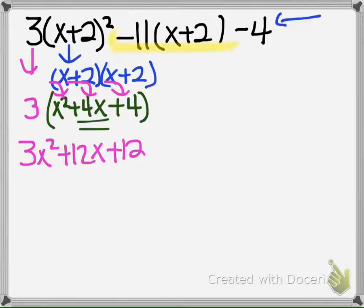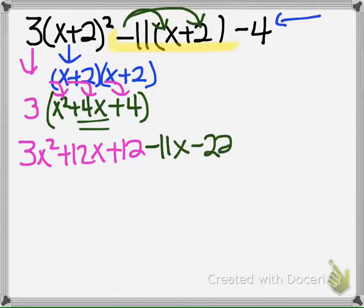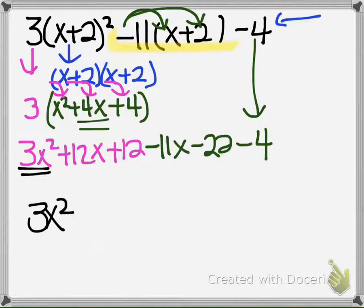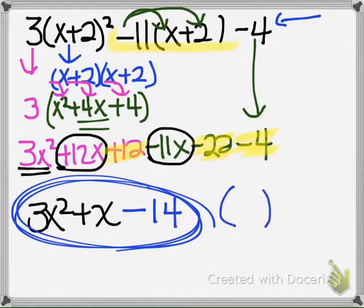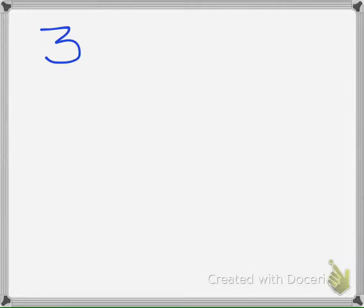Now we come up here and distribute, so we'd have a negative 11x and a negative 22. Then we're going to drop the negative 4 down. Now we combine like terms: we have our 3x squared, then our 12x and negative 11x, which gives positive x. Then we combine 12, negative 22, and negative 4, which is negative 14. So after all of that work, we get 3x squared plus x minus 14 — and that is not factored. Remember, factored means it looks like something times something. So now we're going to have to take the 3x squared plus x minus 14 and factor that.